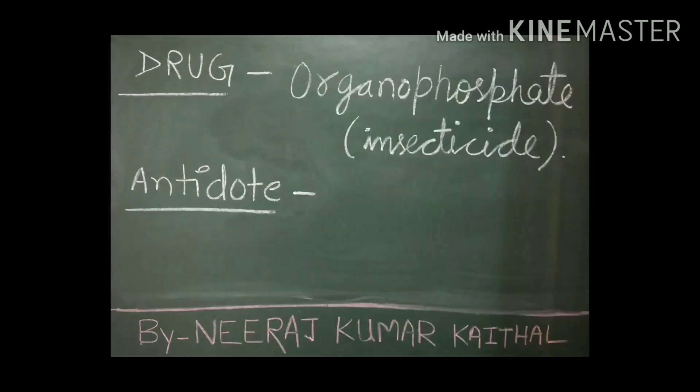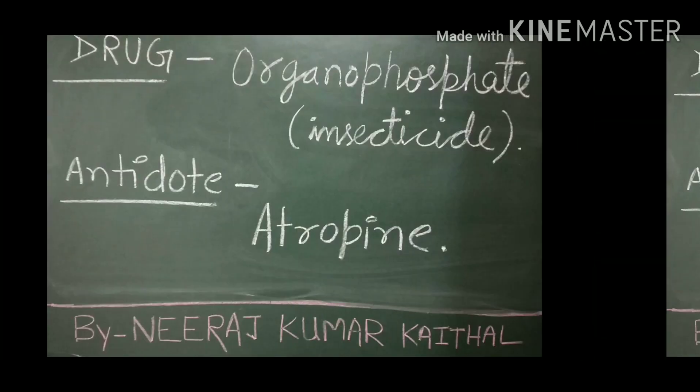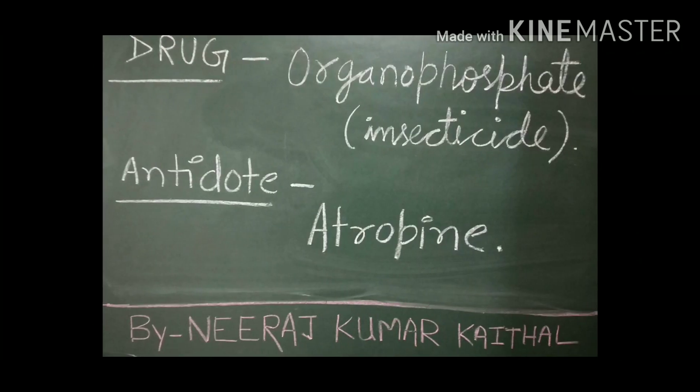Drug name: Organophosphate. It is mainly used in insecticides. Its antidote is Atropine.